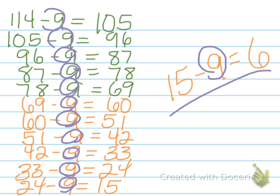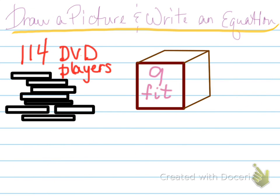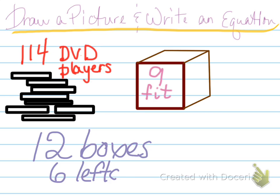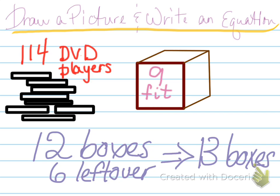So I subtracted it 12 times and then I have a remainder of 6. Now if I had 12 boxes, remember we are looking at how many boxes that we'll need to fit in 114 DVD players. I know that I'm going to need 12 boxes but if I do that I'm going to have 6 left over. I want to make sure that every DVD player goes into a box. So actually, to have a reasonable answer, I'm going to need 13 boxes.